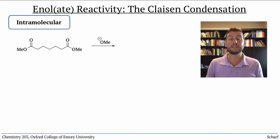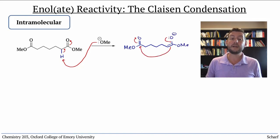First, intramolecular Claisen reactions involve one enolizable carbonyl group within a molecule, reacting with an ester elsewhere in the molecule.